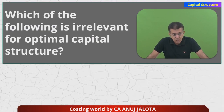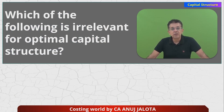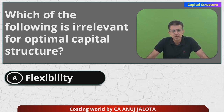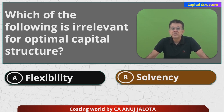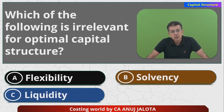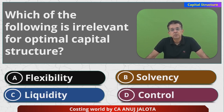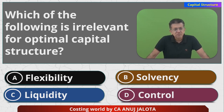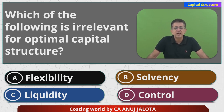Which of the following is irrelevant for optimum capital structure? Optimal means perfect, ideal capital structure. The four options are: flexibility, solvency, liquidity, and control. Let me explain what each of those things means.